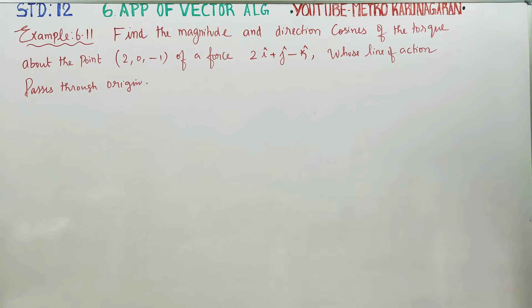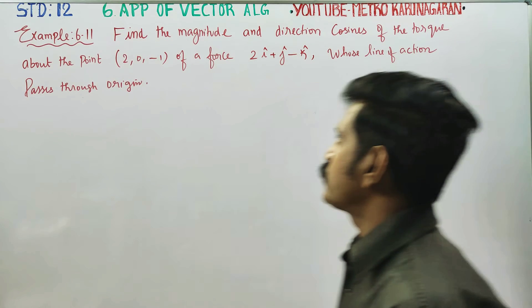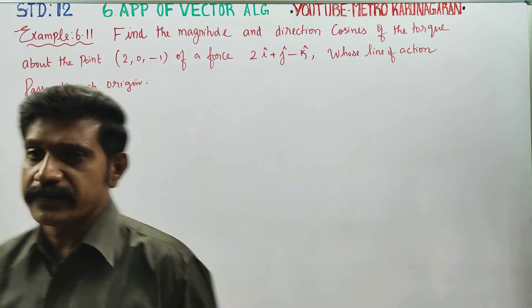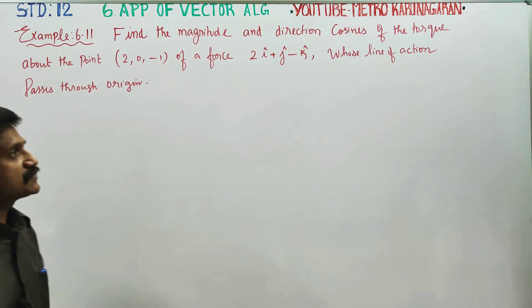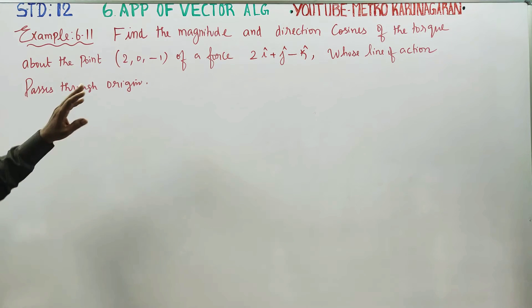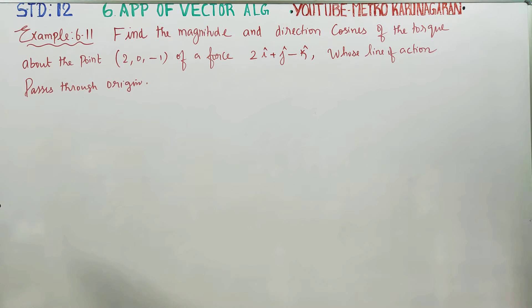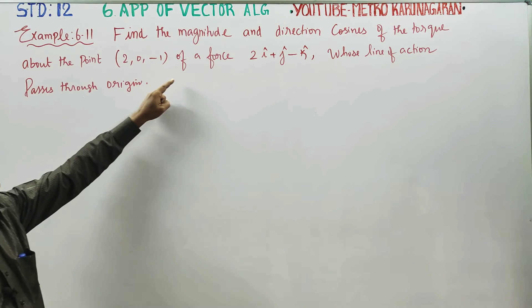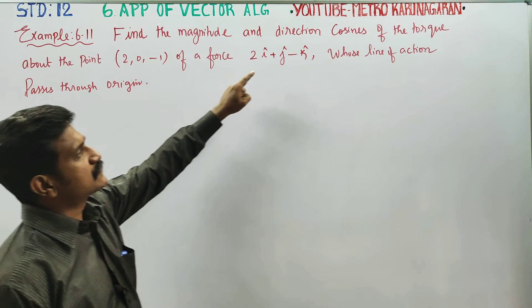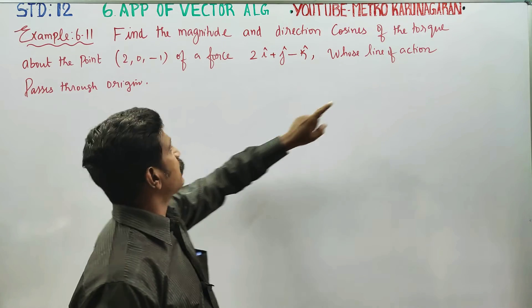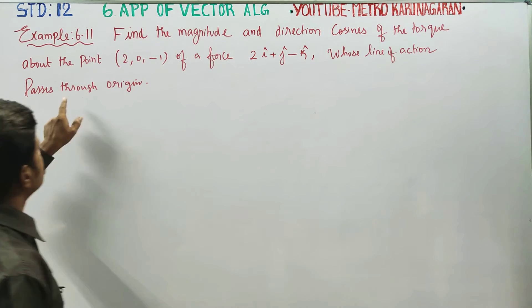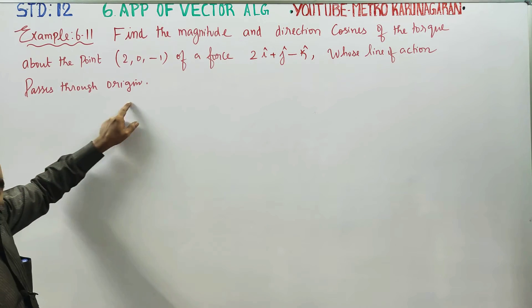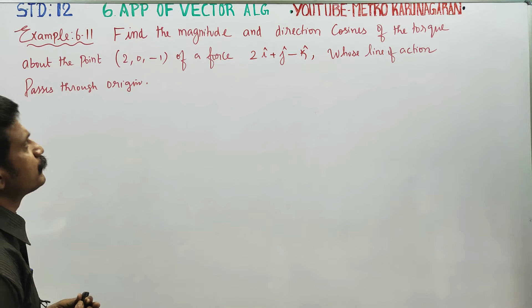Dear 12th standard students, in example 6.11, you have to find the magnitude and direction cosines of the torque about a point of a force whose line of action passes through the origin.